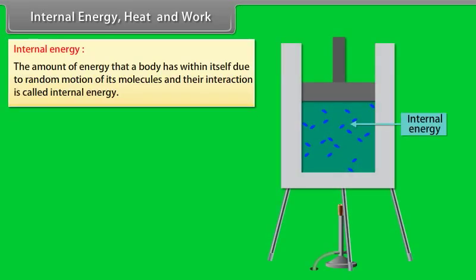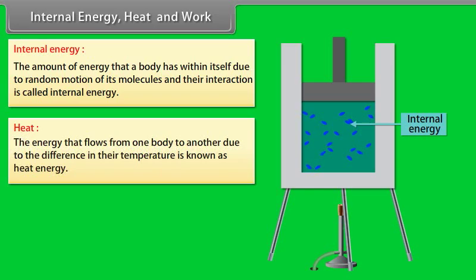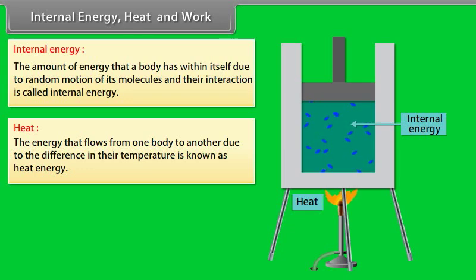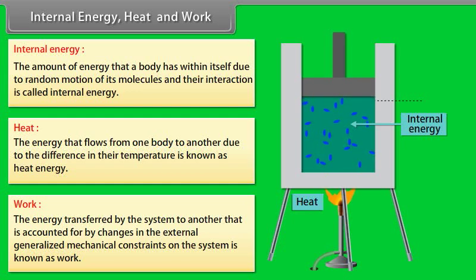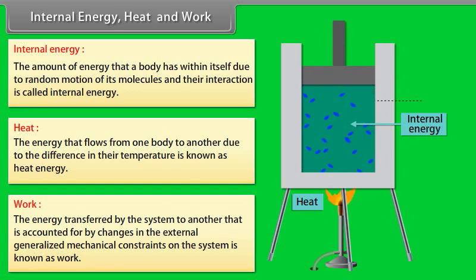The amount of energy that a body has within itself due to random motion of its molecules and their interaction is called internal energy. The energy that flows from one body to another due to the difference in their temperature is known as heat energy. The energy transferred by the system to another, accounted for by changes in external generalized mechanical constraints on the system, is known as work.